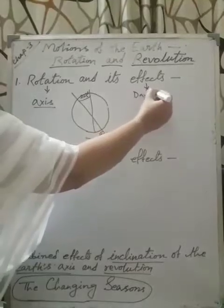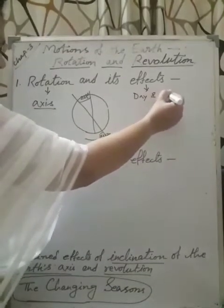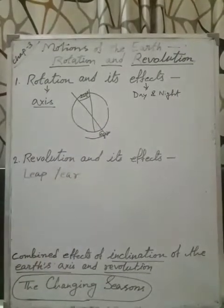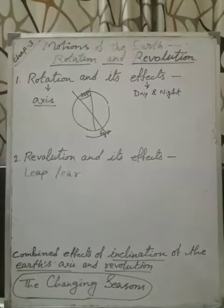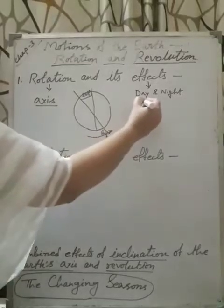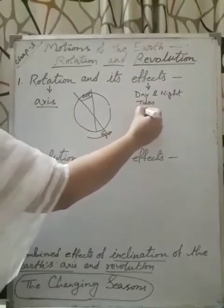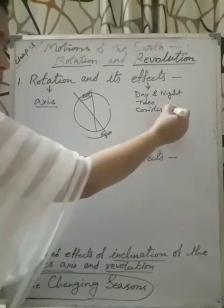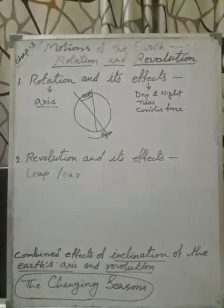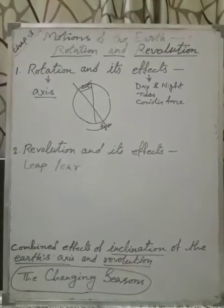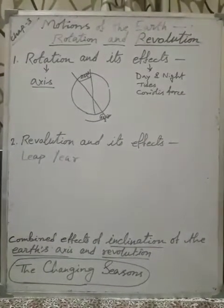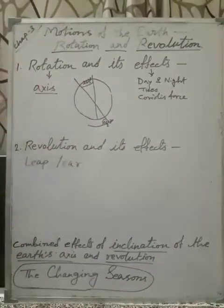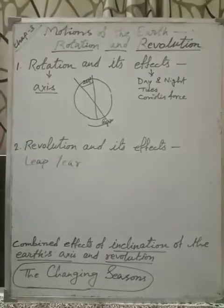But, except this one, few more effects we can see. Formation of tides. Coriolis force develop. This force actually help to deflect wind and ocean currents in different direction on Earth. Next, you can say, due to this rotation, Earth gets a specific shape which is called oblate spheroid.